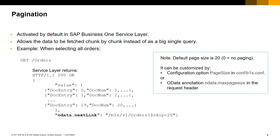Pagination is activated by default in service layer. The default page size is 20, which means that asking for a list of records will only return 20 records maximum. Service layer pagination can be customized either via the service layer configuration file for all requests, or via the OData annotation OData.maxPageSize for a specific request.